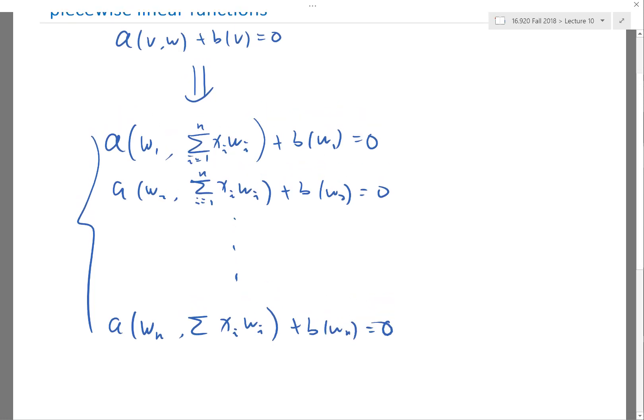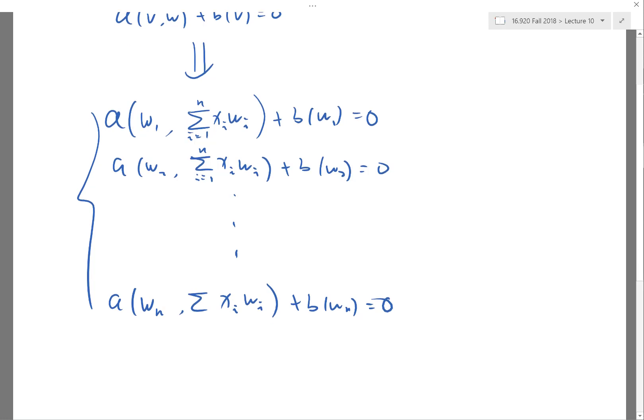If I enforce all of these equations, I can multiply the first equation by any α1, the second equation by any α2, the last equation by any αN, and add them up. Then the first term becomes any V, and this becomes the correspondence. Then I enforce the bilinear form for any V.